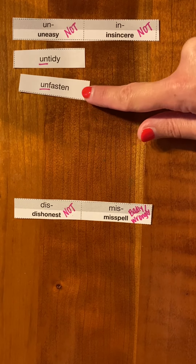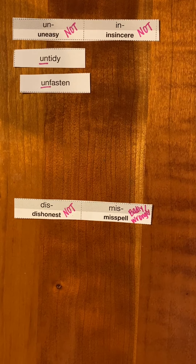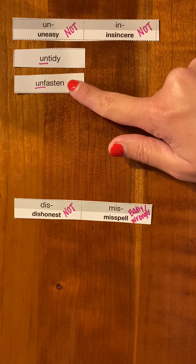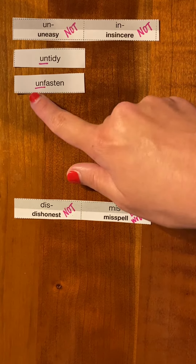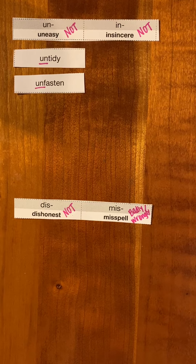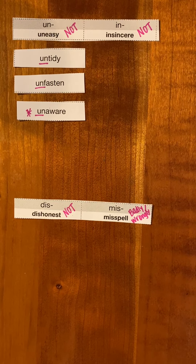We have the word "unfasten." Fasten means to put together — so I might fasten my buttons, put them together to close it. I could fasten stitches if I was having surgery. So if I unfasten something, it means to not fasten it, to unbutton. For example, we have the word "unaware" — that is a ding ding ding, daily double one that you should be aware of for your quiz.